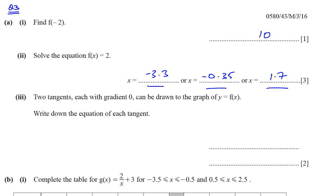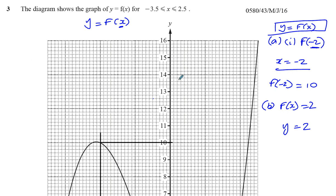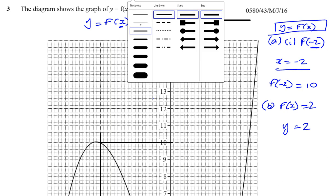So, two tangents, each with gradient 0, can be drawn to the graph of y = f(x). Write down the equation of each tangent. Now, the gradient of the tangent is 0. That means it's a horizontal line. Horizontal lines have 0 gradients. So, we've got to draw some horizontal lines here which touch the curve as a tangent.